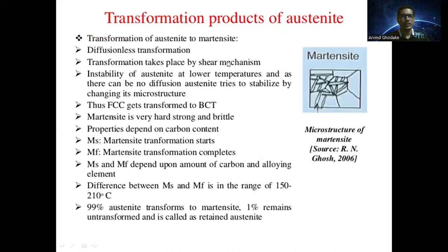The next product is the transformation of austenite into martensite. It is a diffusionless transformation that takes place by a shear mechanism. Due to the instability of austenite at lower temperatures and the absence of diffusion, austenite tries to stabilize by changing its microstructure. Thus the FCC structure gets transformed into a BCT structure. Martensite is very hard, strong, and brittle in nature, and its properties depend on carbon content.